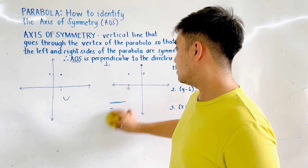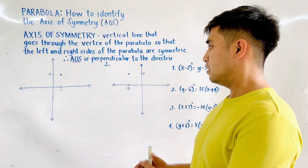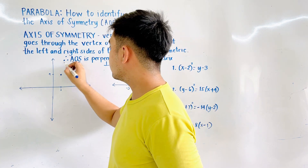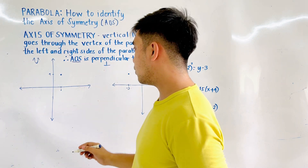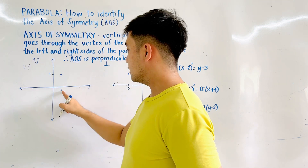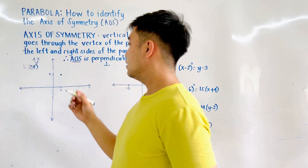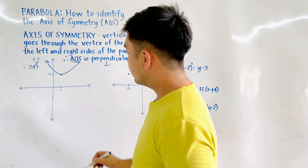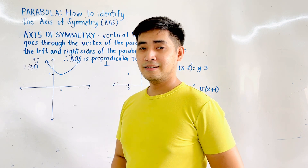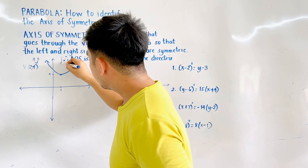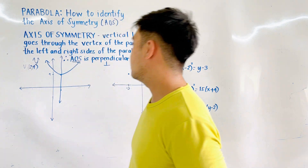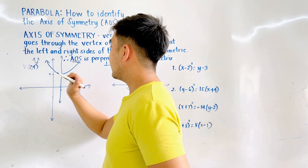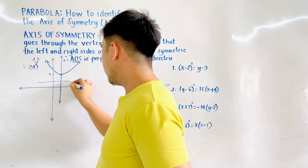Let's have an example. Assume that this is the vertex of the parabola, and it is opening upward. The vertex is located at (2, 4). So if that is the vertex and it is opening upward, this is our parabola. Therefore, this is the axis of symmetry — it separates the parabola into two symmetrical parts: the right side and the left side. This is now the directrix.